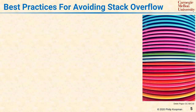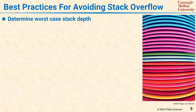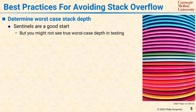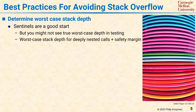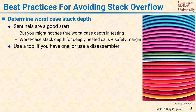Here are some best practices for ensuring that Stack Overflow is not a problem in your system. First, determine the worst case Stack Depth. Using Sentinels during program testing is a good start and will probably tell you if you have huge problems. But it is very difficult to observe the true worst case combination of subroutine calls, nested with operating system calls, nested with interrupt service routines, and their effect on Stack Depth during testing. Therefore, it's better if you can use a static analysis tool to do Stack Depth checking. Or, if need be, disassemble the code, build a call graph including the OS and interrupts, and count up the worst case Stack Depth for yourself.